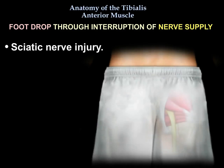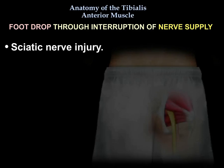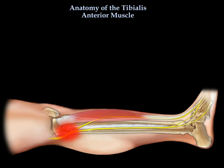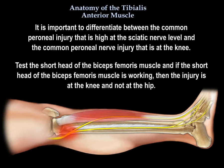Another cause of interrupted nerve supply to the tibialis anterior is sciatic nerve injury. The common peroneal nerve or the deep peroneal nerve will be affected around the neck of the fibula. It is important to differentiate between a high sciatic nerve level injury and a common peroneal nerve injury at the knee. Test the short head of the biceps femoris — if it is working, then the injury is at the knee and not at the hip.